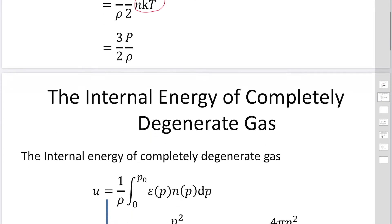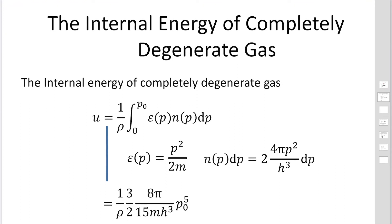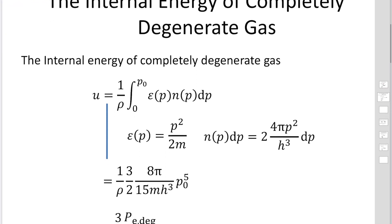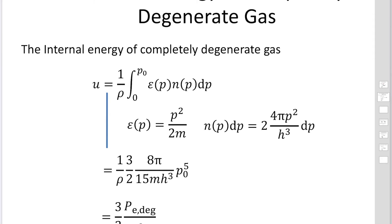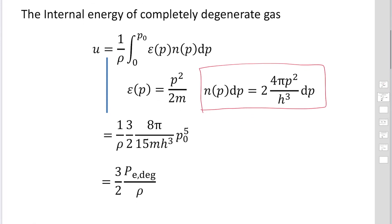Next, we find the internal energy of a completely degenerate gas. Instead of the Maxwell distribution, we use the distribution function for degenerate gas. The number density n(p)dp is expressed as 2 — where the factor of 2 comes from the number of spins, up spin and down spin — times 4π p squared over h cubed, times dp. We substitute energy as p squared over 2m and perform the integrals.